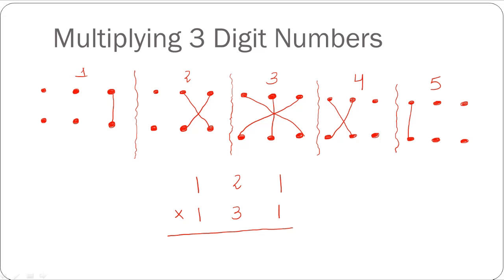For three-digit numbers, the matrix given represents these steps. There are a total of five steps involved in multiplying three-digit numbers using the Vedic Math technique. The first step is multiplying one times one vertically. The second step is multiplying one times two and three times one, and adding the products. The third step is multiplying one times one, then one times one, then two times three, and adding all the products. The fourth step is multiplying three times one and one times two and adding the products. And the last step is multiplying one times one.